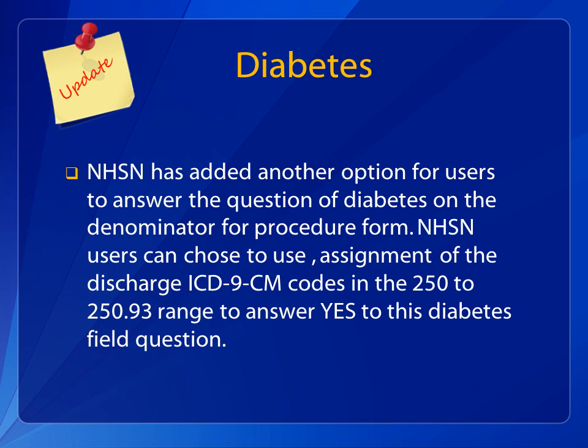In 2015, NHSN is providing a second method to answer the diabetes field question. Assignment of discharge ICD-9-CM codes in the 250 to 250.93 range is acceptable for answering Yes to the diabetes field question.